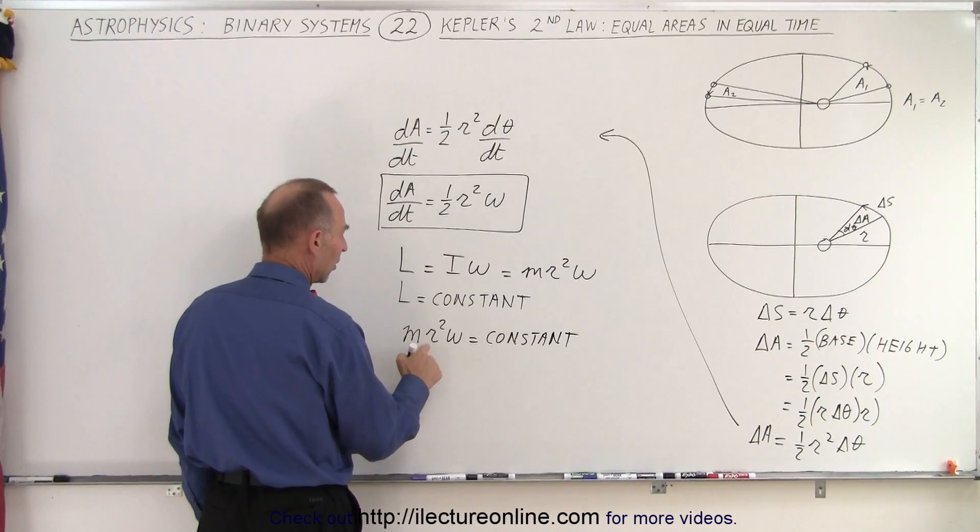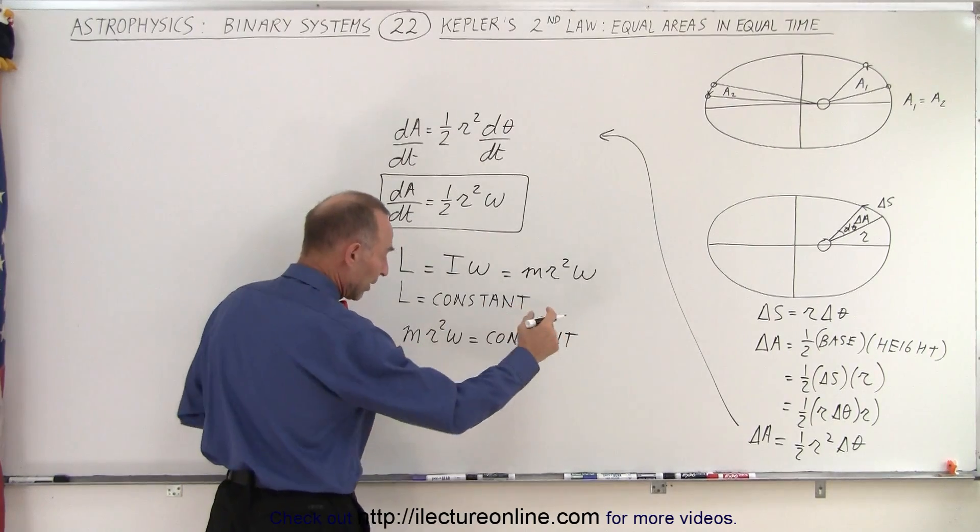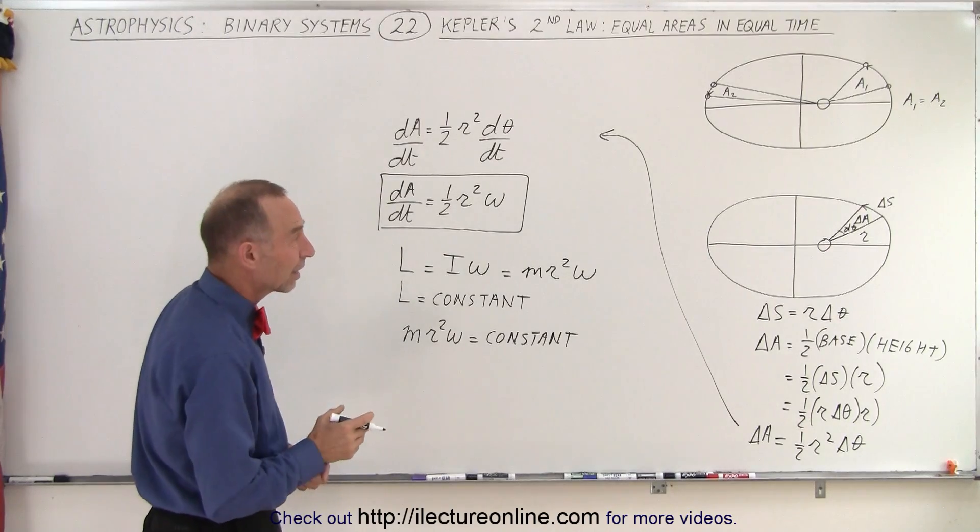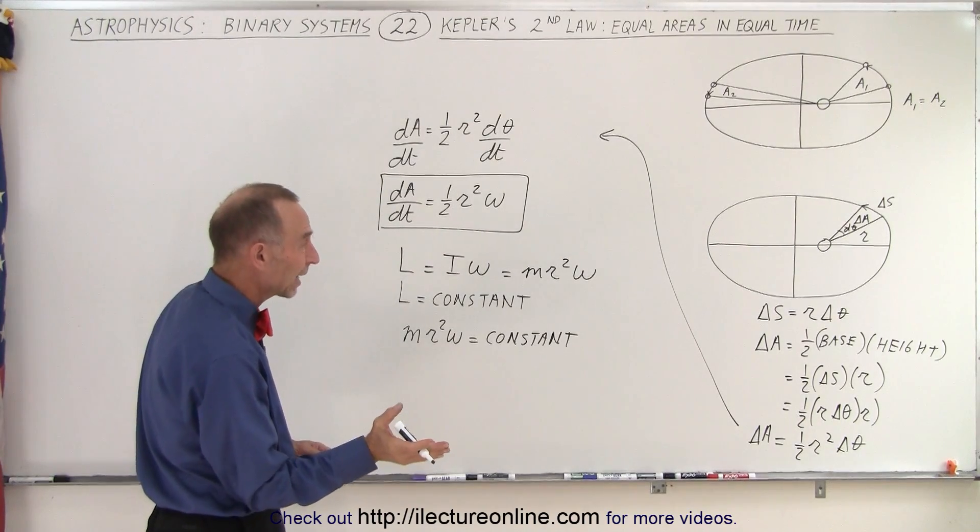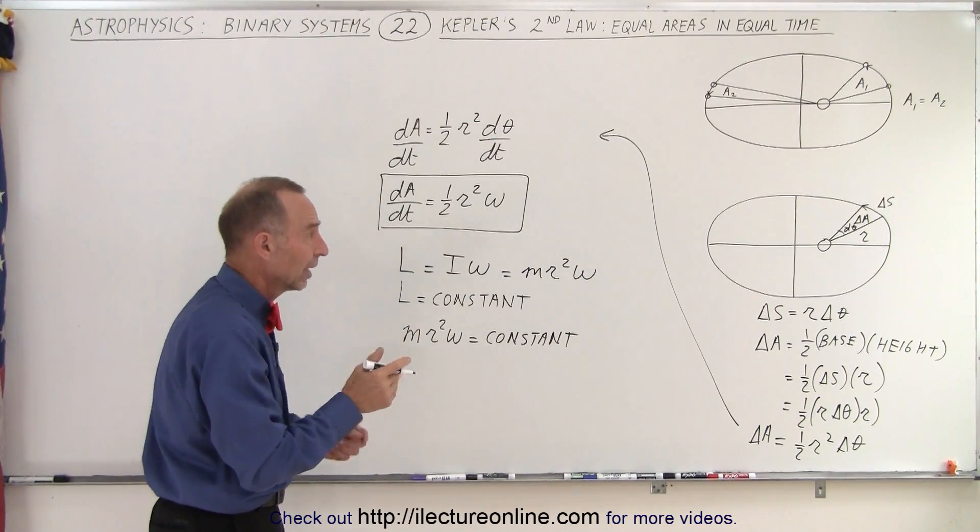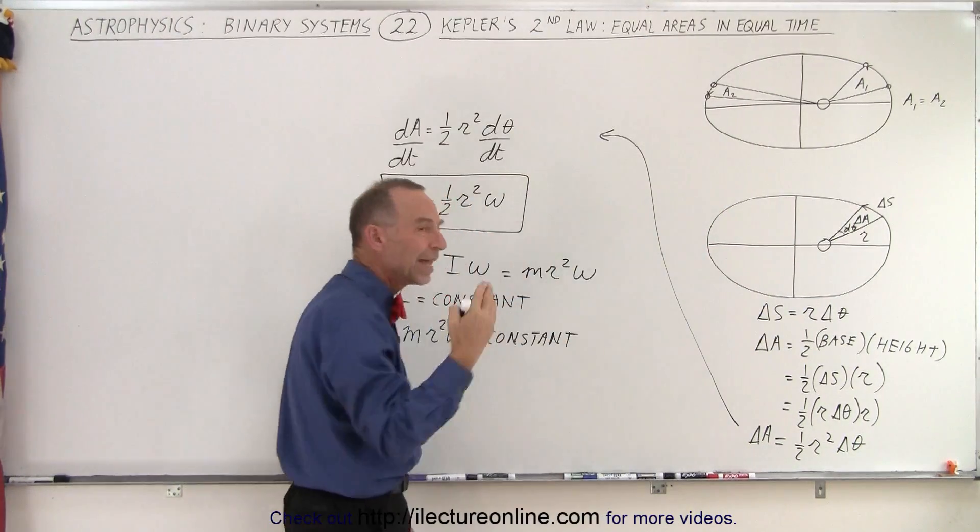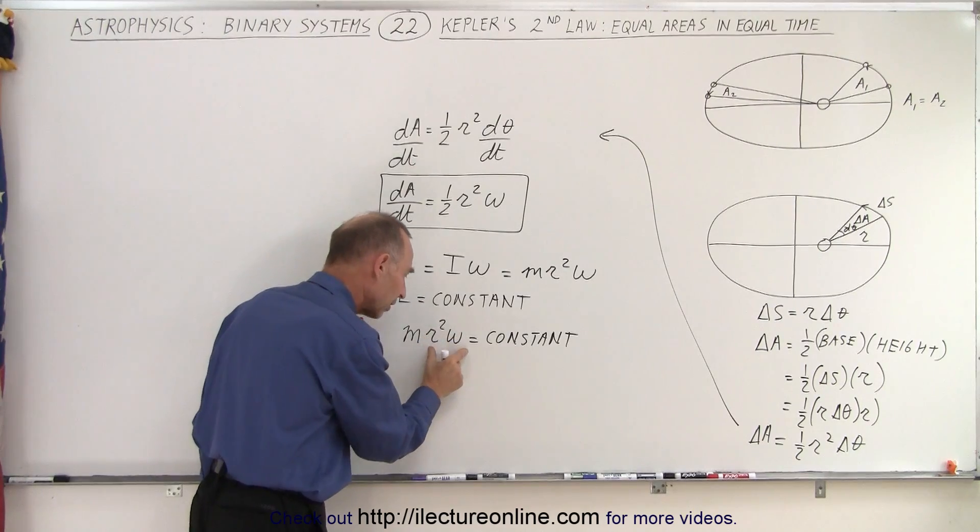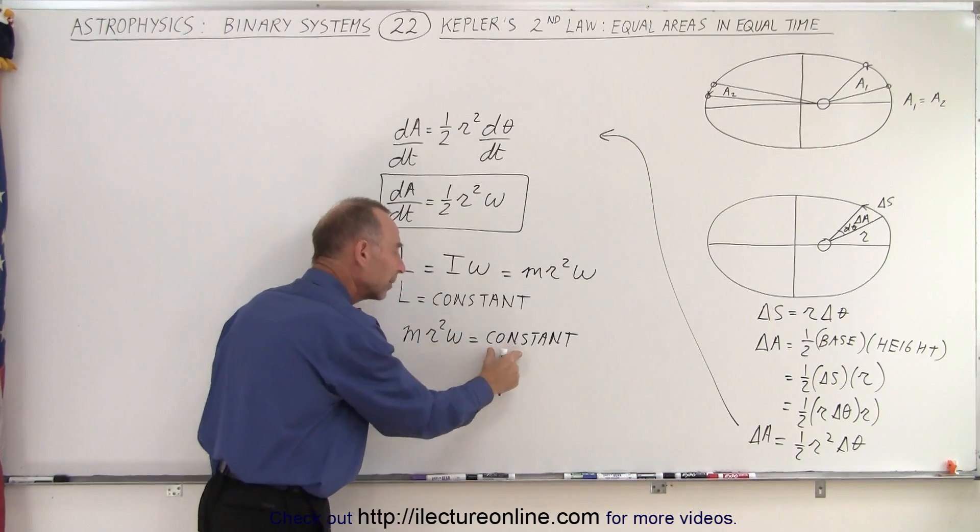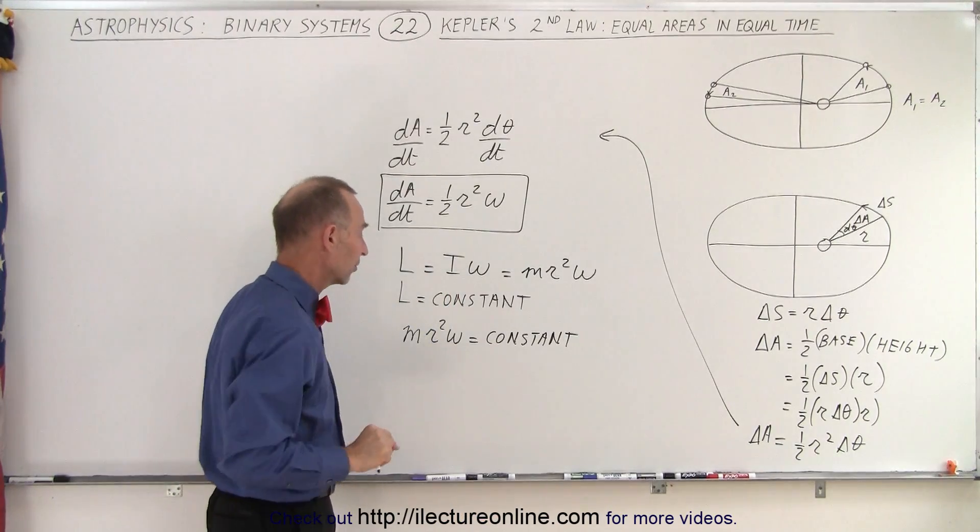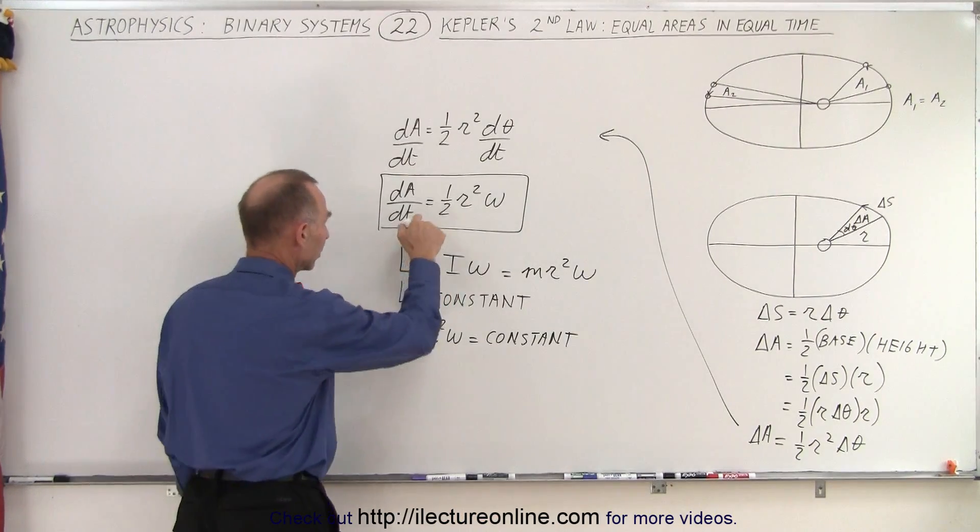Now, notice that m is a constant, r is a variable because the radius will change, and omega, well, let's see here, is omega a constant? Well, you know that omega has to change, because it's going to go fast, the planets will move faster here and slower there, so omega is a variable, r is a variable, but the product of r squared omega, that must be a constant. Why do we know it's a constant? Because the angular momentum is a constant.